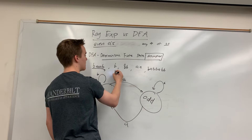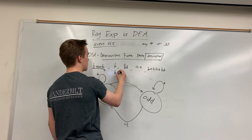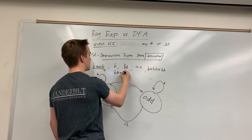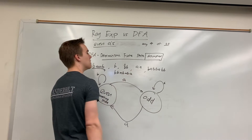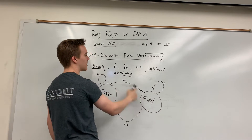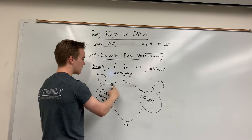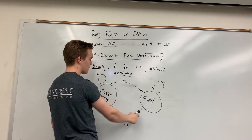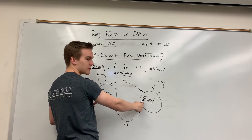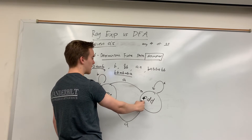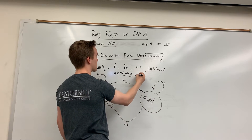Something that's bad, like B-B-A-B-A-B-A, would obviously end up in the odd state because there are an odd number of A's. It would go to odd, come back, go to odd again — the B's don't affect where I am — and I'd end in an odd state. So it's no good. This is the idea of a DFA.